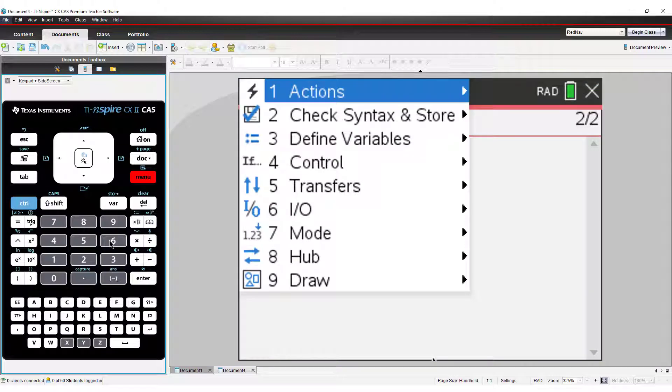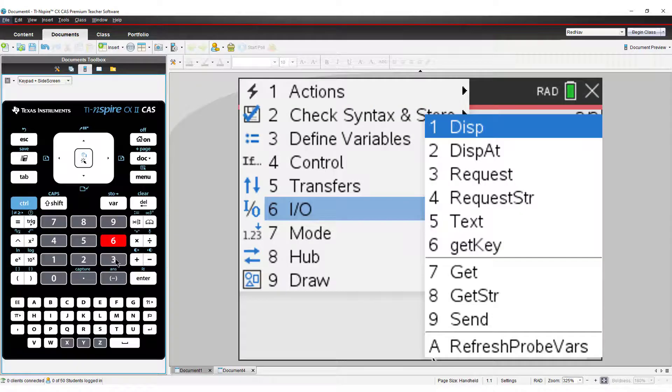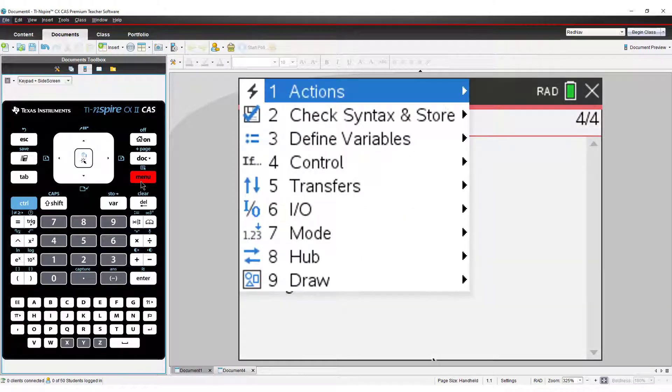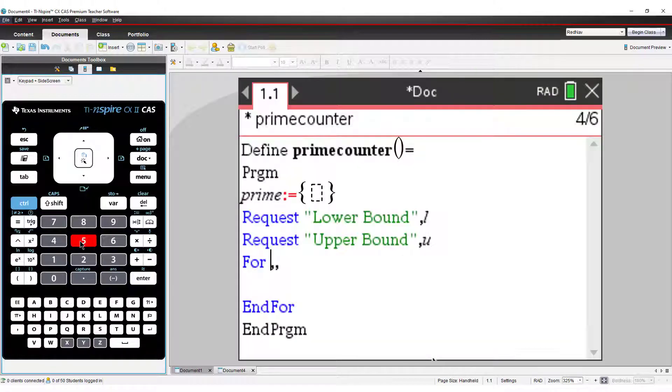Now I will request the lower and upper values in my search for prime numbers. I can use a for loop. My loop variable is i, starting with l, my lower value, and finishing with u, my upper value.